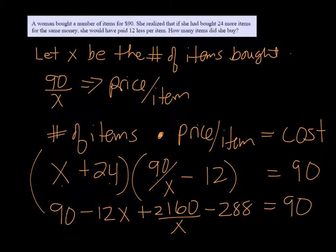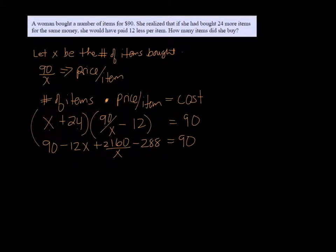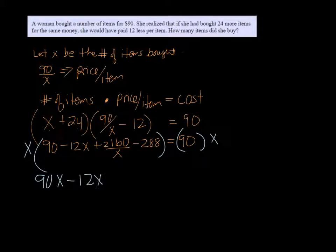Now our variable is in the denominator, so in order to get it out we're going to multiply both sides of the equation by X. So we get 90X minus 12X squared plus 2160 minus 288X equals 90X.